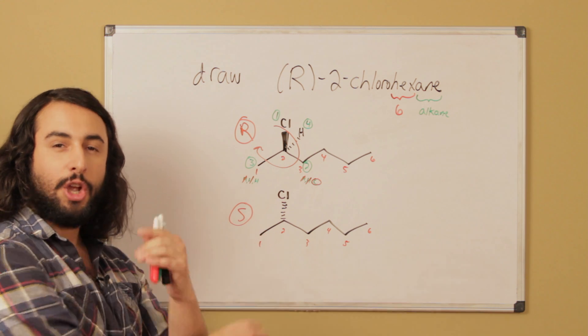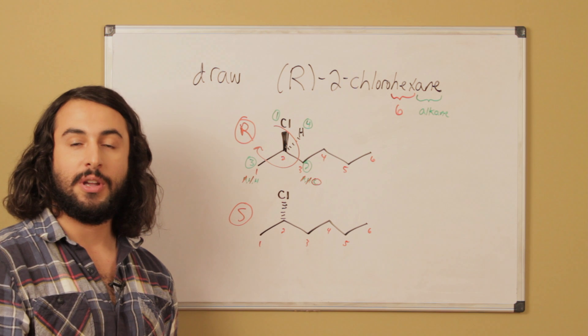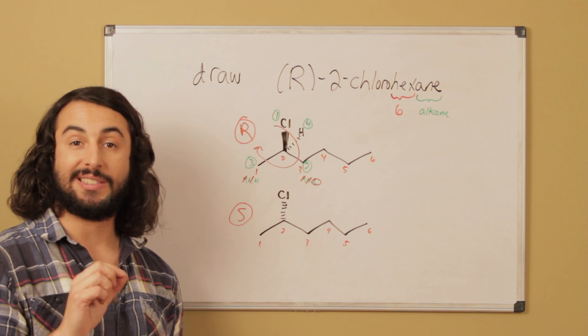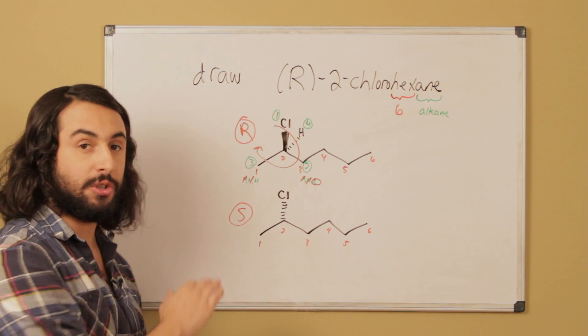So if you invert the stereocenter to make it easier for yourself to assess R and S, you must then invert your answer back to reflect the original molecule.